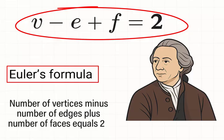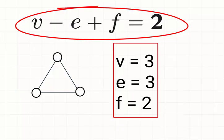Let's see this formula in action with two examples. Example 1, a triangle. A triangle has three vertices, three edges, two faces, one inside and one outside. Now apply Euler's formula, 3 minus 3 plus 2 equals 2, and it works.